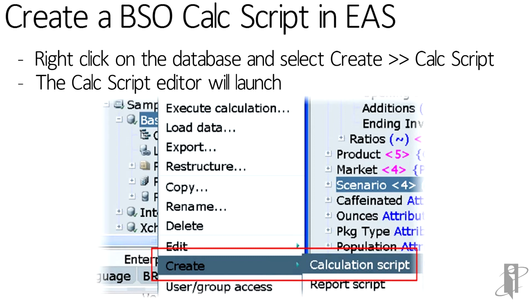I will tell you that sometimes the wording on the functions changes from version to version, but just look around in EAS. In general, right-clicking on the database or right-clicking on the list of calculation scripts will give you an option to create a new Calc Script.